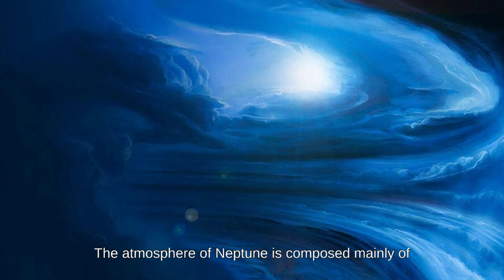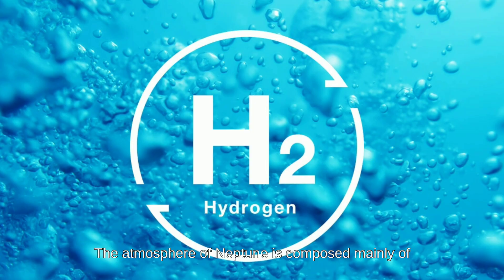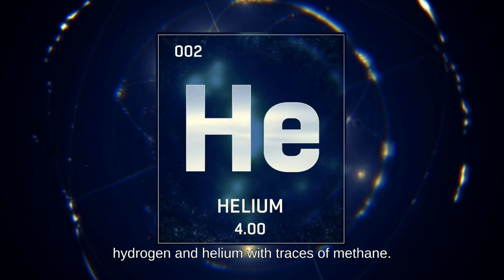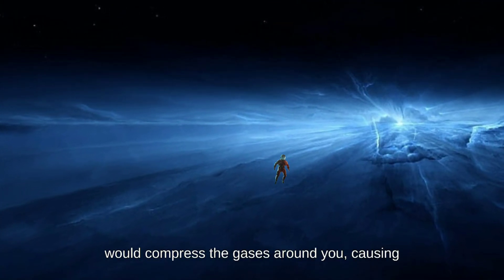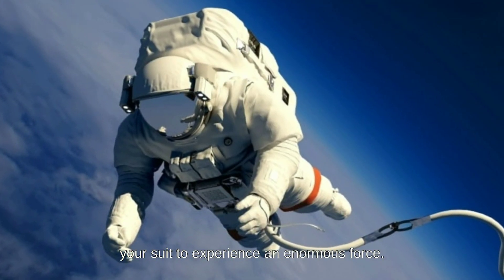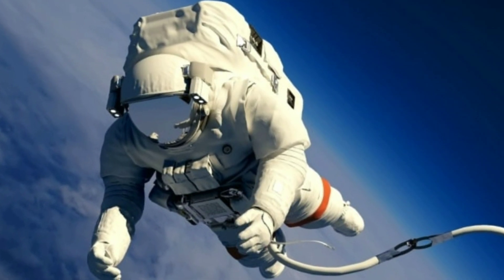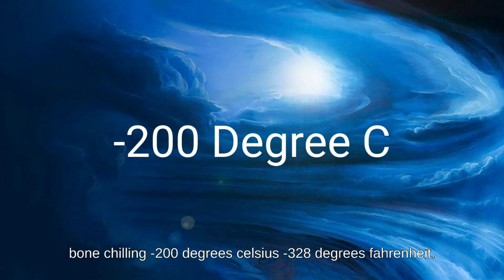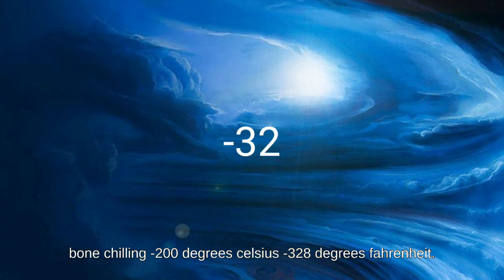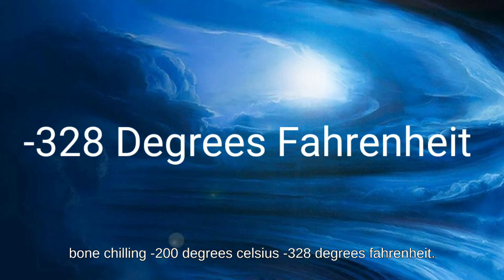First, the atmosphere of Neptune is composed mainly of hydrogen and helium, with traces of methane. As you descend deeper, the immense pressure would compress the gases around you, causing your suit to experience an enormous force. The temperature would also drop significantly to a bone-chilling minus 200 degrees Celsius, minus 328 degrees Fahrenheit.